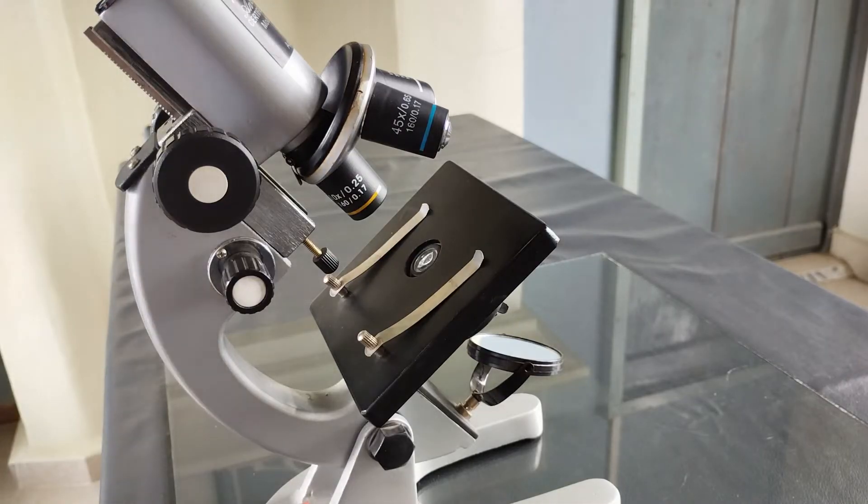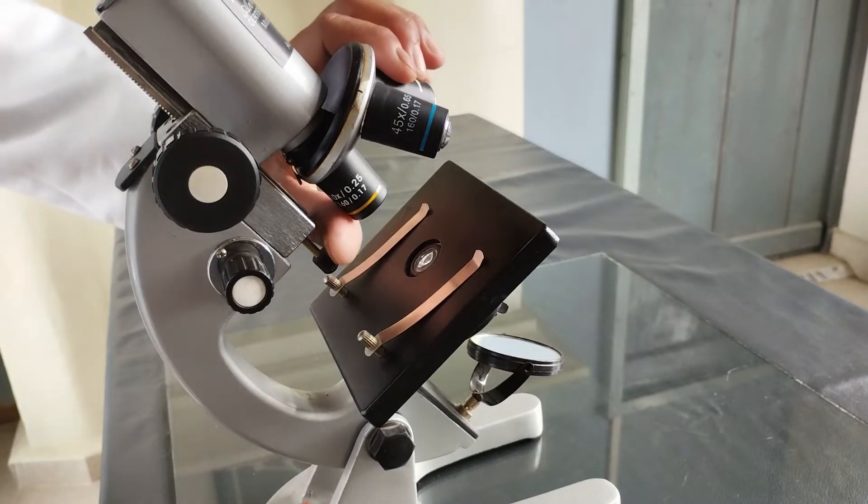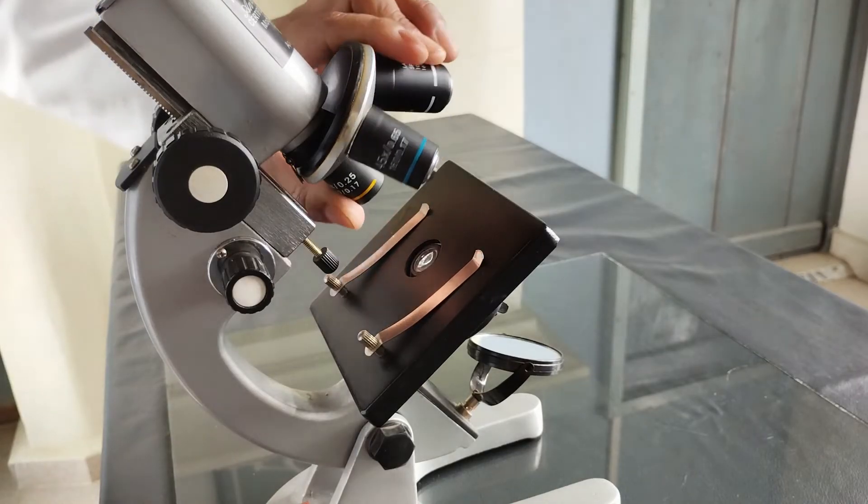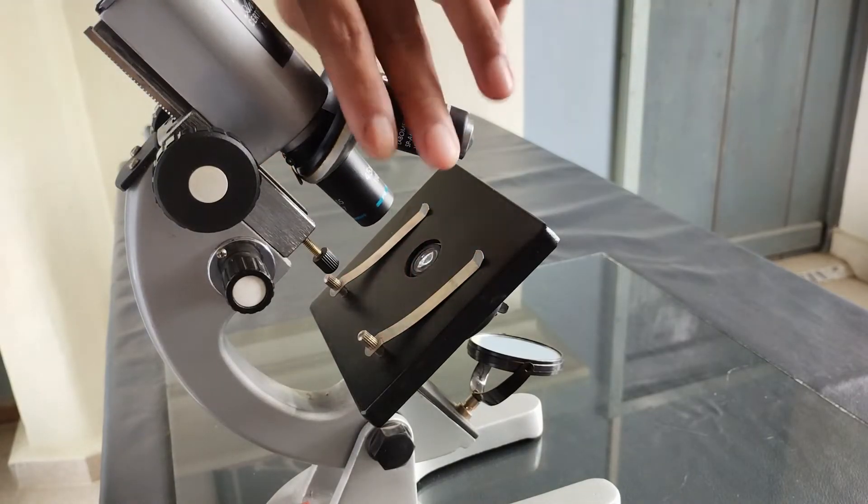Now, position a low-power objective lens, either the 4x or the 10x lens, in line with the eyepiece. To do this, rotate the nose piece until one of the low-power objective lenses clicks into position and aligns itself with the body tube.